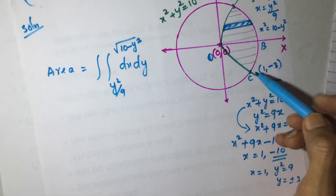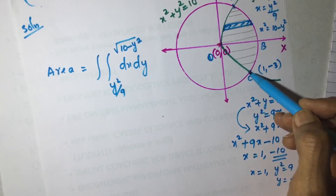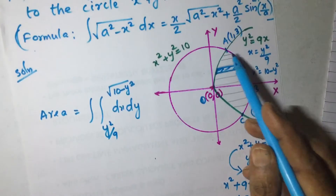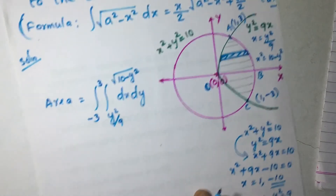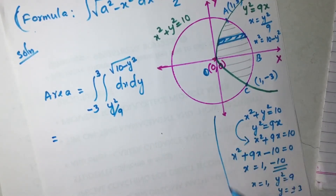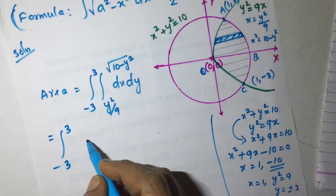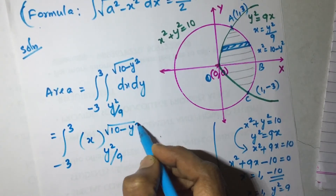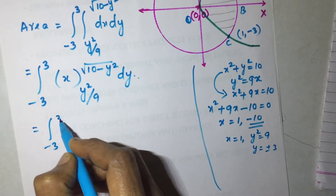The strip sweeps from y = −3 to y = +3. So y goes from −3 to +3. The integral becomes: ∫ from −3 to +3 of [∫ from y²/9 to √(10−y²) dx] dy. Integrating dx gives x evaluated from y²/9 to √(10 − y²), so the inner integral equals √(10 − y²) − y²/9.